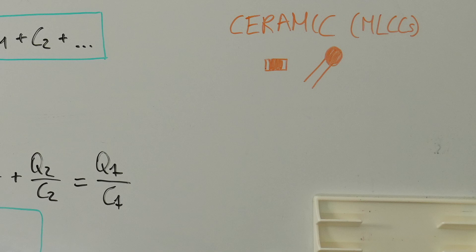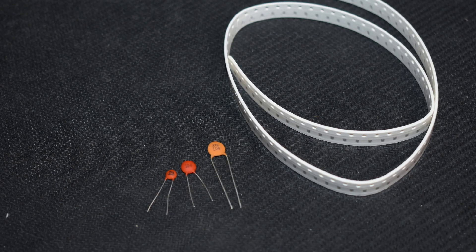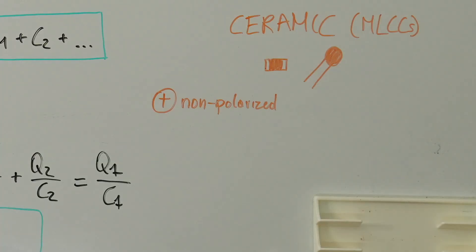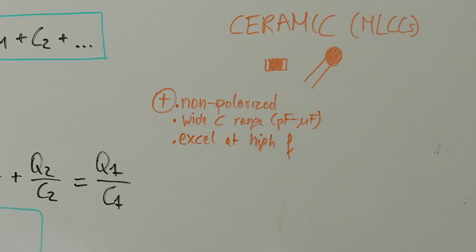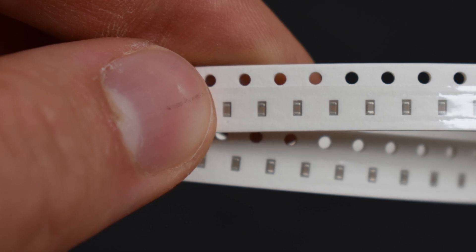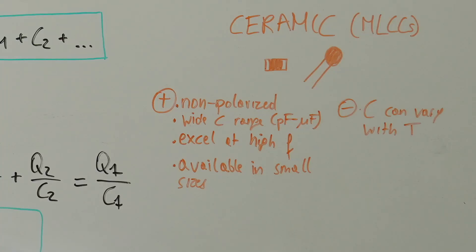Ceramic capacitors utilize ceramic as a dielectric, with the most common type being multilayer ceramic capacitors, or MLCCs for short. They are non-polarized, which means that they are usable unidirectionally. They come at wide ranges of capacitance values from picofarads to microfarads. They are used in both low and high voltage applications. They excel in high frequency, making them suitable for high frequency applications, and are available in small sizes, ideal for space-constrained designs like those found on fly computers. The capacitance can vary with temperature change and applied voltage. Higher precision and stable types can be quite expensive.